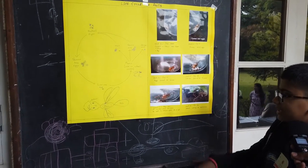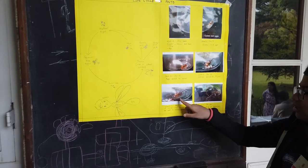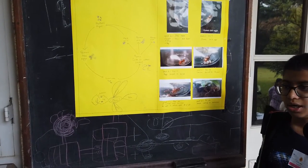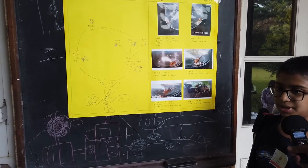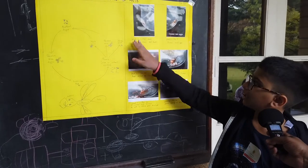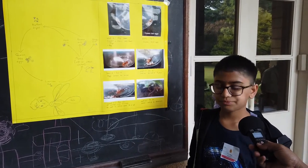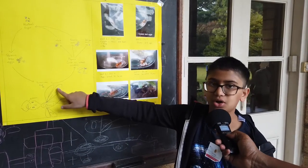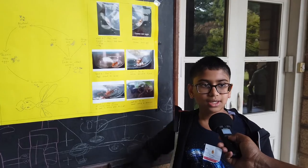Seven weeks after I had caught her, the adult worker ants came. So there are some differences between the queen ant and the adult worker ants. The queen ant has wings, or at least wing scars where the wings once were.